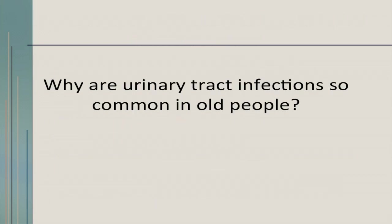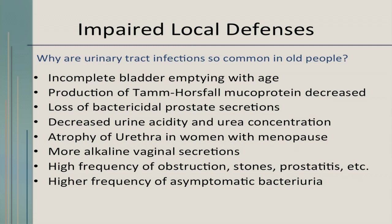You can't practice geriatric medicine without understanding how to treat urinary tract infections. We know the bladder doesn't completely empty with age, and production of Tamm-Horsfall mucoprotein which protects against infection is decreased. There's loss of bactericidal prostate secretions and the urine becomes less acidic. Women's urethras atrophy in menopause. There's a higher frequency of asymptomatic bacteriuria, and the only manifestation might be delirium. You don't need the clear-cut symptomatology to diagnose a urinary tract infection in older patients — be very in tune to the change in cognition, which is probably one of the most common manifestations.